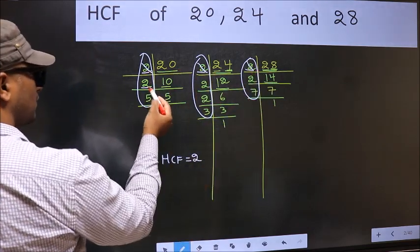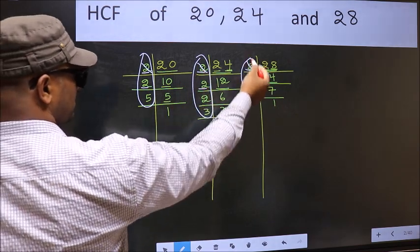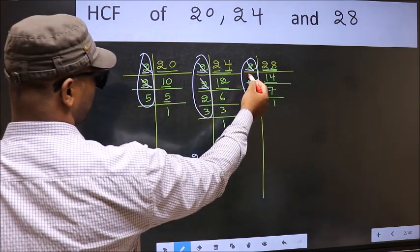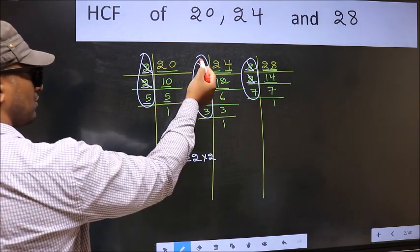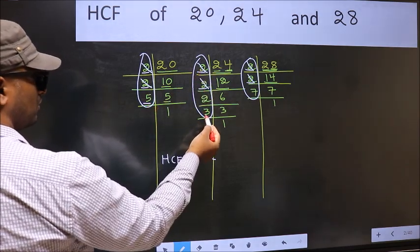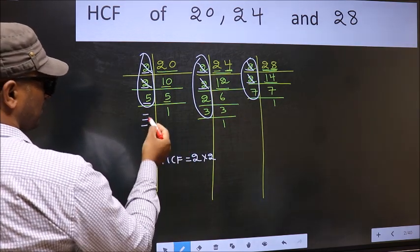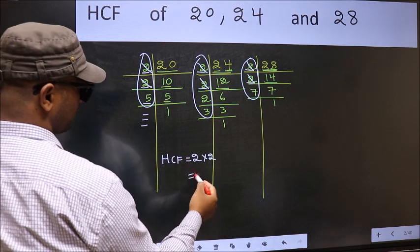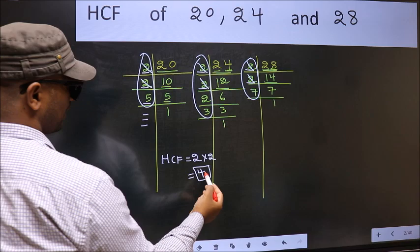Now next number 5. Do we have 5 here? No. So no need to check in the other place. No more numbers have been left. Therefore our HCF is 2 times 2, which is 4. 4 is our HCF.